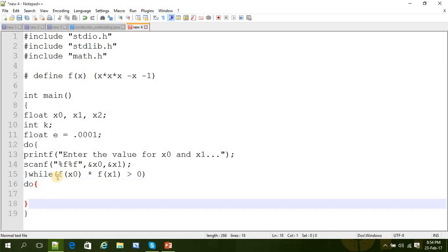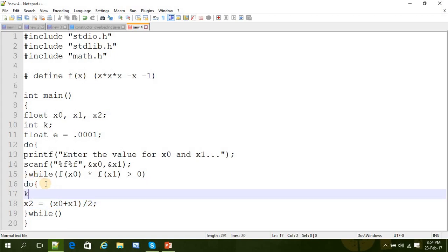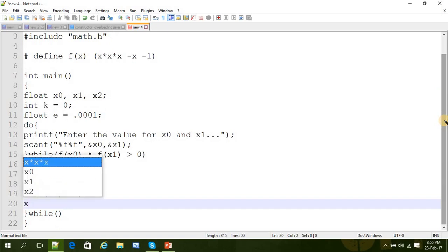And then another do-while loop for calculating x2. x2 is equal to (x0 + x1) divided by 2. And you can just give k++ here. And here we should write k is equal to 0 before the loop. And then if f(x2) greater than 0, then x1 is equal to x2.